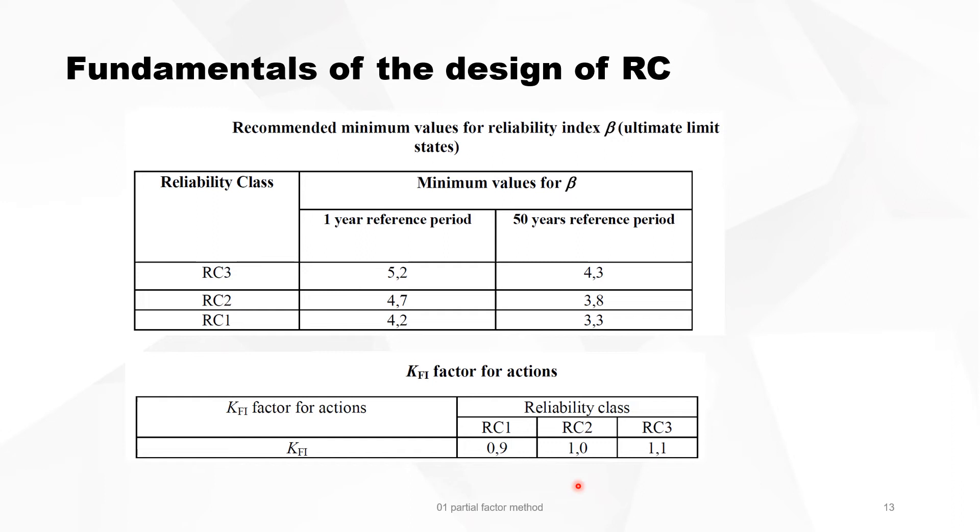When you want to change from consequence class two, for instance, and you want to make it safer, then you multiply your loads by 1.1 to achieve a reliability class three or a consequence class three.